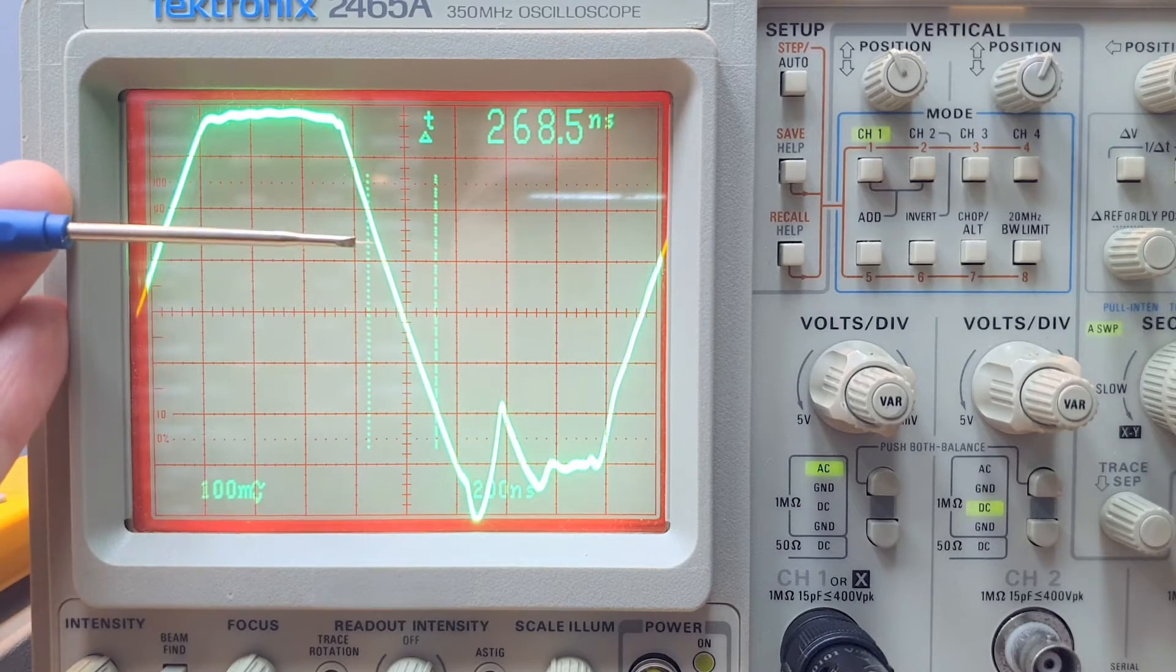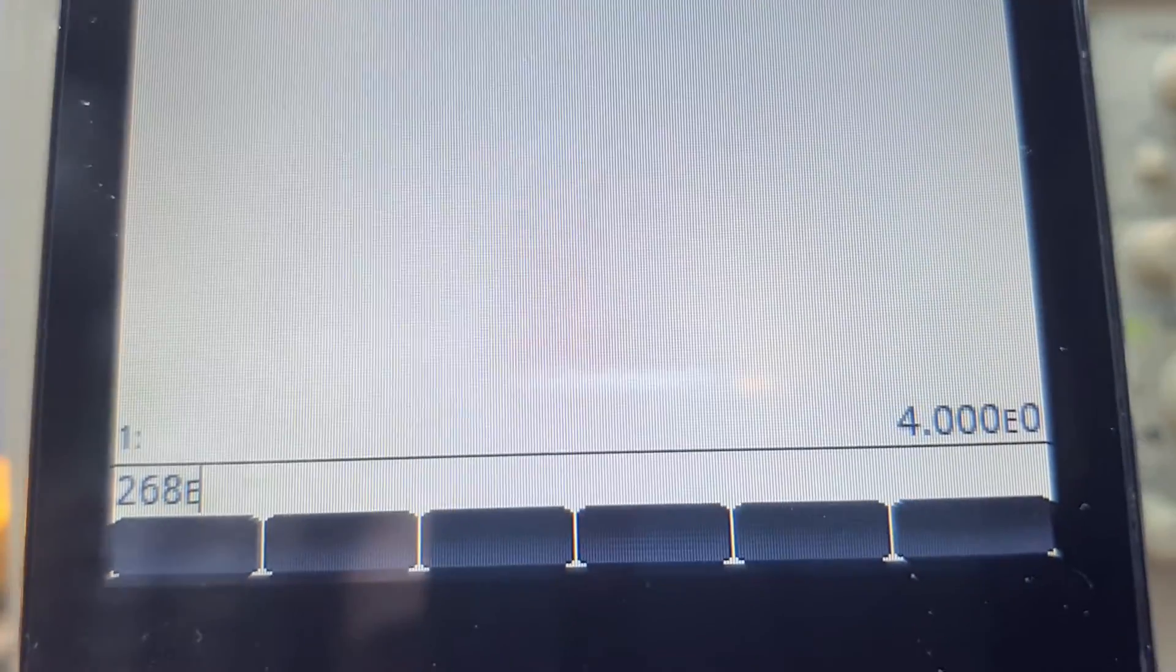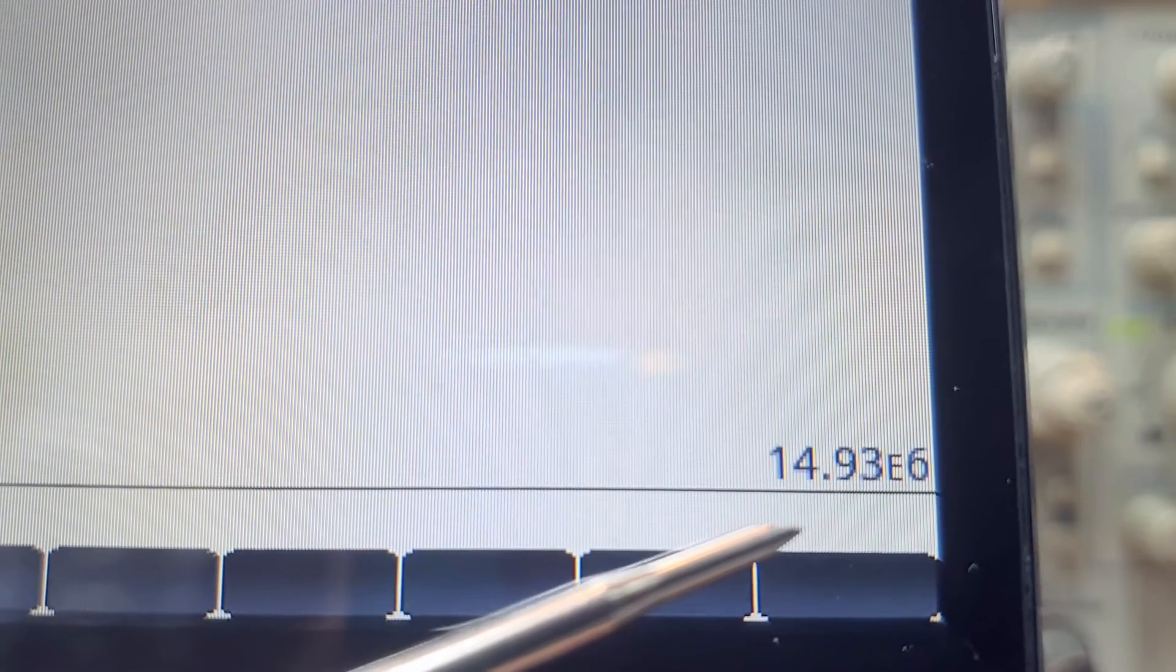We have one, two, three, four volts of voltage excursion. So we have four volts and 268 nanoseconds divided. And this is the measured slew rate.